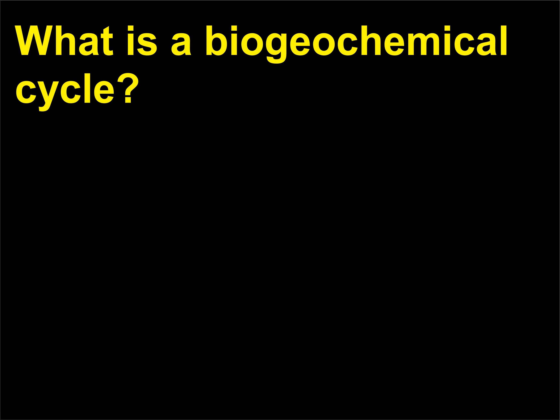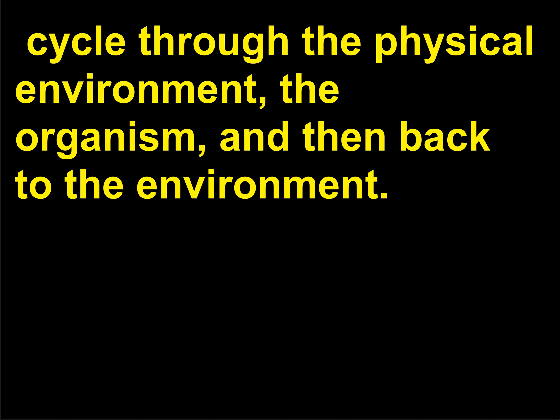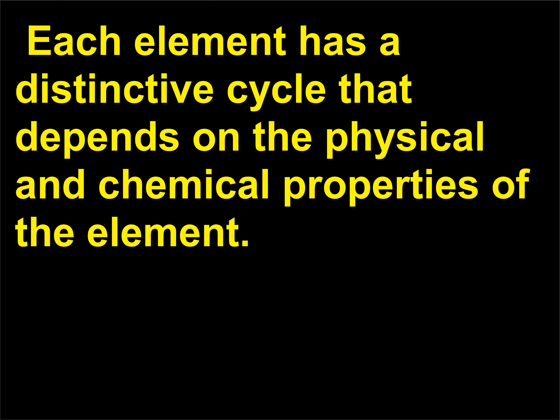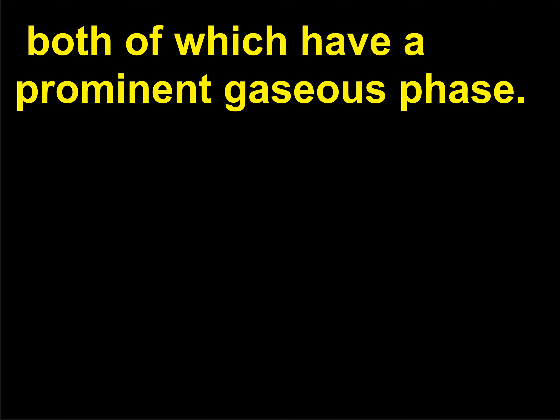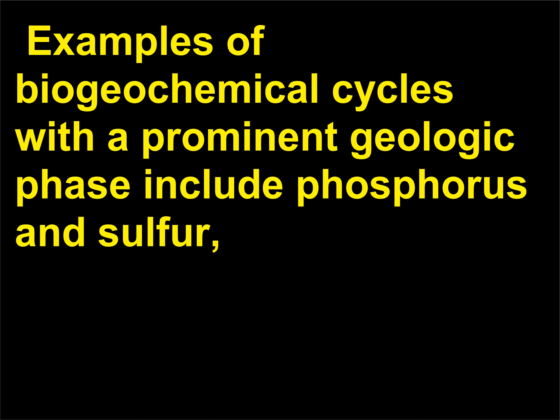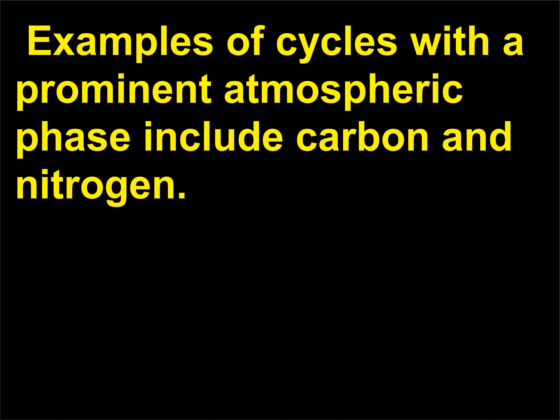What is a biogeochemical cycle? The elements that organisms need most — carbon, nitrogen, phosphorus, and sulfur — cycle through the physical environment, the organism, and then back to the environment. Each element has a distinctive cycle that depends on the physical and chemical properties of the element. Examples of biogeochemical cycles include the carbon and nitrogen cycles, both of which have a prominent gaseous phase. Examples with a prominent geologic phase include phosphorus and sulfur, where a large portion of the element may be stored in ocean sediments. Cycles with a prominent atmospheric phase include carbon and nitrogen.